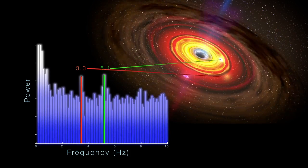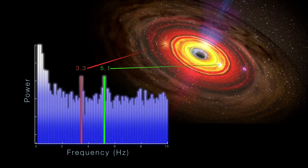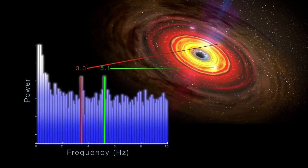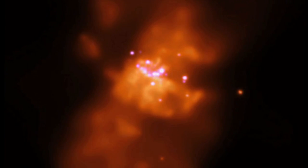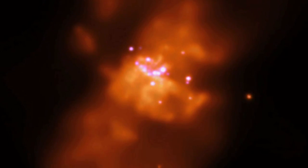These signals, combined with other previously established variations, pointed to an accurate mass of about 400 Suns. With that finding, M82X1 now joins the exclusive club of middle mass black holes.